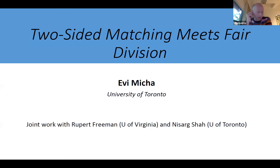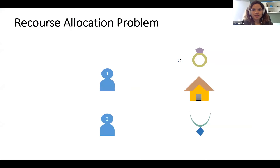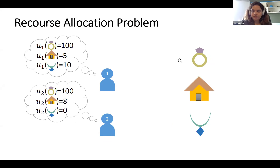Our next speaker is Evi Micha from the University of Toronto, speaking about connections between matching and fair division. This is joint work with Nisarg Shah. In the classic resource allocation problem, we have agents and indivisible goods, and our task is to assign the goods fairly. One famous notion of fairness is envy-freeness, requiring that no agent envies another's allocation. Since envy-freeness is not always achievable, a common relaxation is Envy-Freeness up to One Good (EF1).